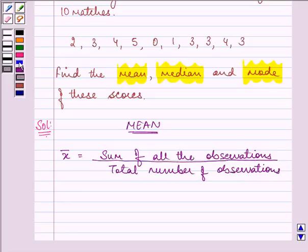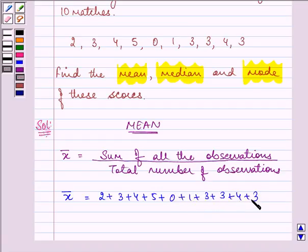What we need to do here is to find out this mean. We need to find the sum of all these observations: 2 plus 3 plus 4 plus 5 plus 0 plus 1 plus 3 plus 3 plus 4 plus 3.